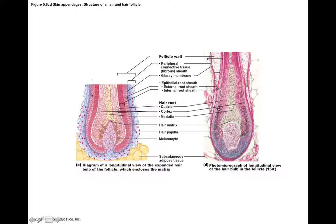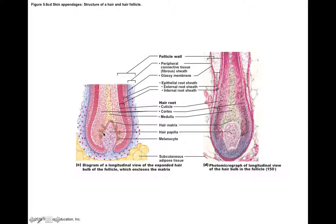Looking at this longitudinal section of the hair, you can see the connective tissue sheath on the outside and the epithelial root sheath, with the medulla and cortex of the hair itself. The expanded tip is called the bulb, and this protrusion of dermis into the bulb is called the papilla, which contains lots of blood vessels and nerve endings. This supplies nutrients to the matrix, where cells divide to grow the extending hair. Melanocytes nearby incorporate melanin into the growing hair, giving hair its color, and in the absence of melanin, hair appears grayish or white due to air bubbles.